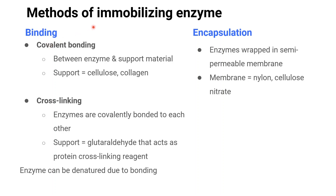Now let's look at binding. Covalent bonding is widely used between the enzyme and support material. The support material can be cellulose, collagen, or synthetic agents. Next is cross-linking: enzymes are covalently bonded to each other, also known as covalent bonding between various groups of enzymes. Glutaraldehyde acts as a protein cross-linking reagent. Enzymes can be denatured due to this bonding.